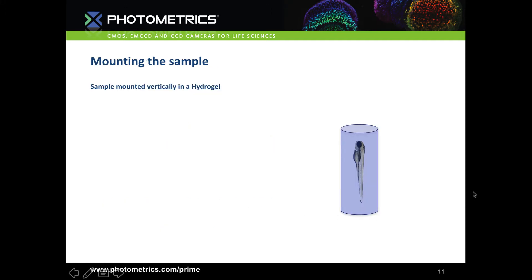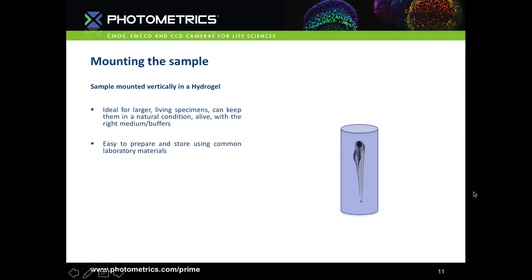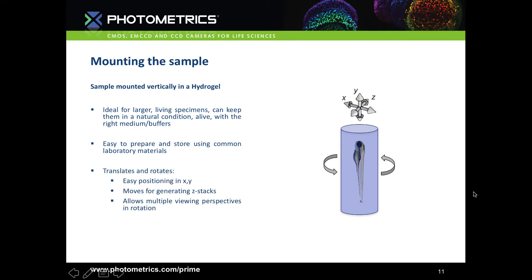Next we want to look at how we mount the sample to take full advantage of the lightsheet. The most common way is to mount the sample vertically in a hydrogel. It's ideal for larger living specimens because you can keep them in natural conditions with the right medium and buffers. It also translates and rotates really nicely — easy positioning in X and Y, then you move it through the lightsheet to generate Z-stacks and rotate for multiple viewing positions.